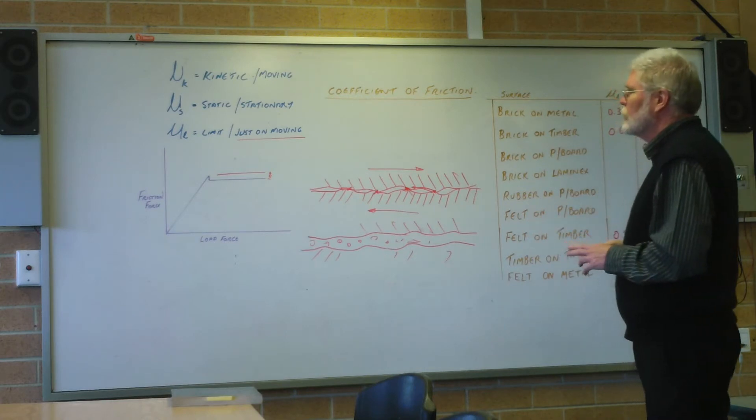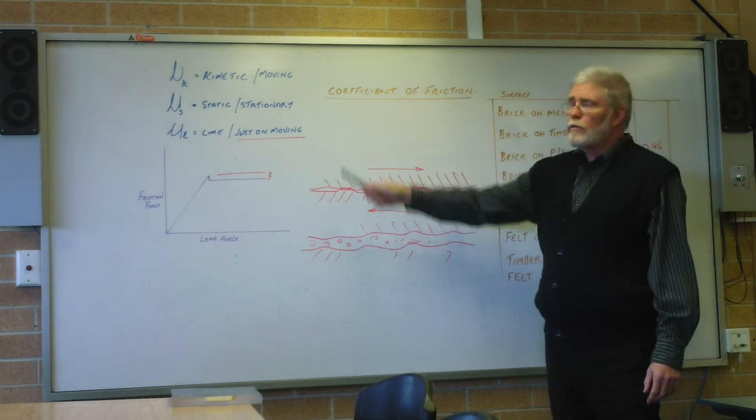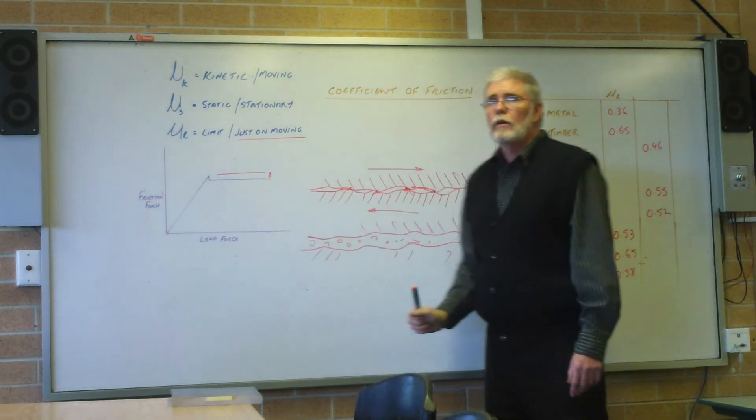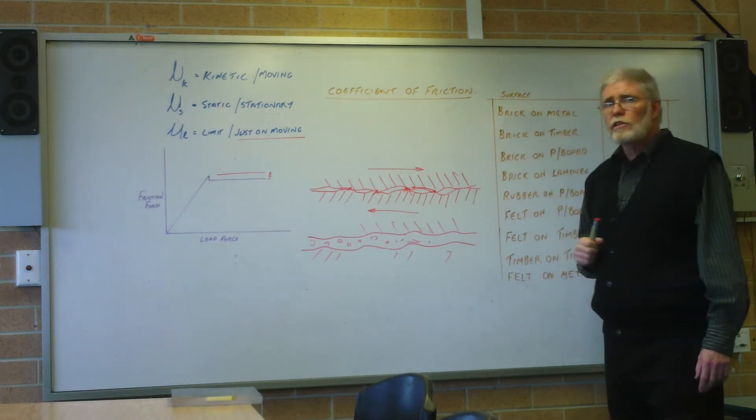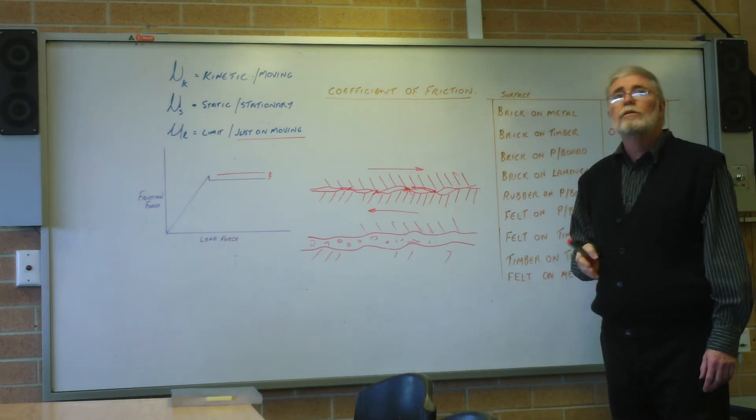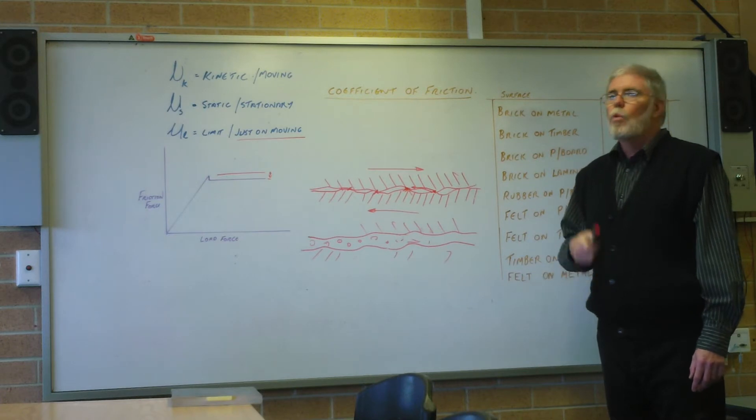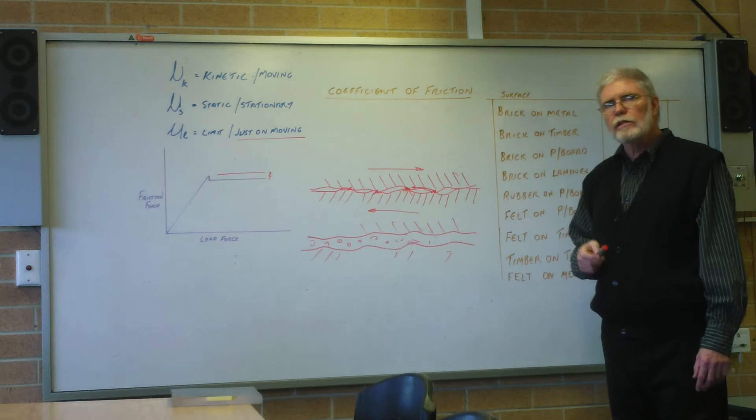The big term: coefficient of friction, symbol mu, it's a value. That value is determined by the surfaces. It's easy to calculate if you do a simple experiment based on the angle that you need to slide along, so gravity is helping you make that call. Where will it come into play?